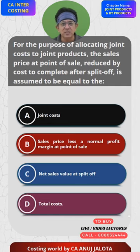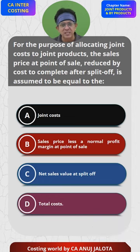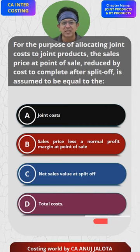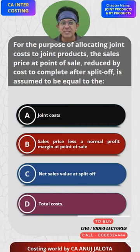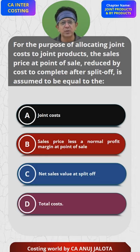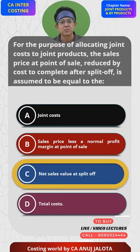Notional sales value method is final sales value minus the post-separation cost. Notional sales value is also called net realizable sales value method, but the net realizable word is not there. So those guys are simply calling that as option C — net sales value at split-off point — meaning net realizable sales value at split-off point. So the answer should be C. That's the correct answer.